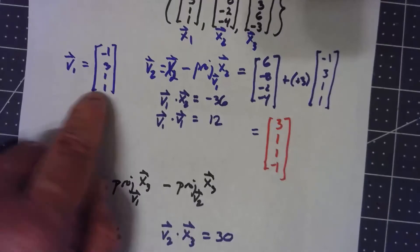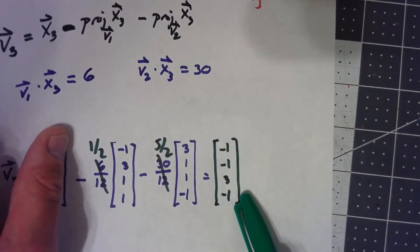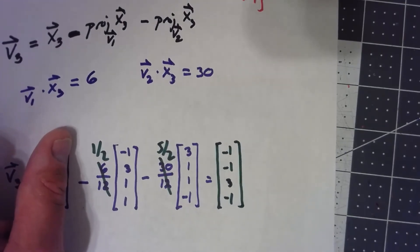So this one, this one, and this one together should be an orthogonal basis for the same subspace.